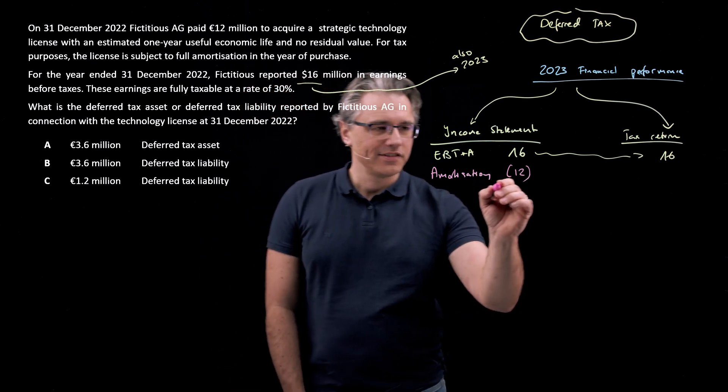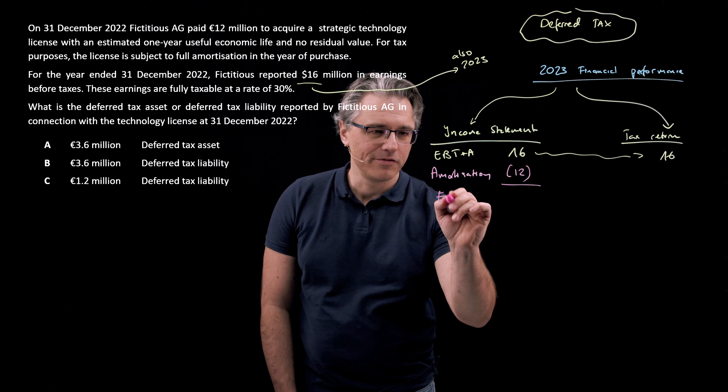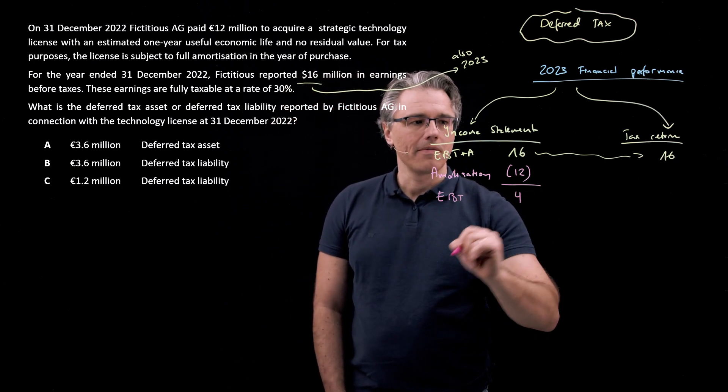And now after this, we will have the proper earnings before taxes, realistically, of 4 million.